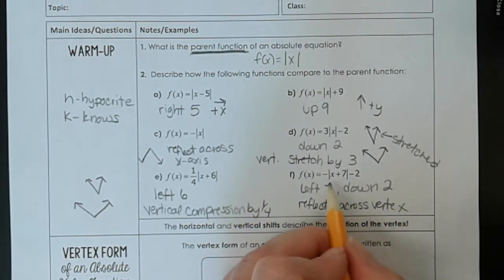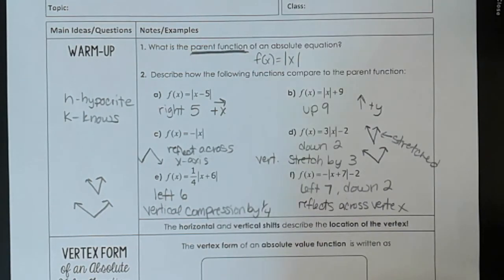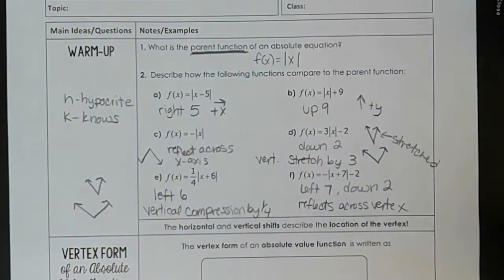Now this negative out here, we know reflects it across... reflects across the vertex. It doesn't actually reflect across the x-axis. It just flips down. And you can check on Desmos and things for that.